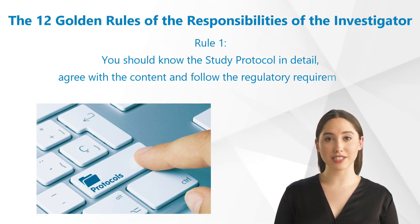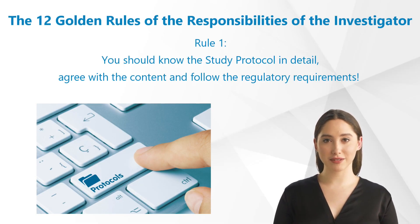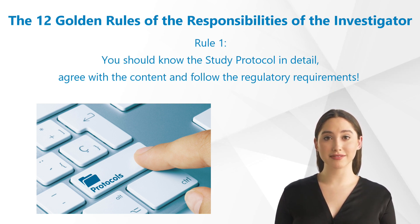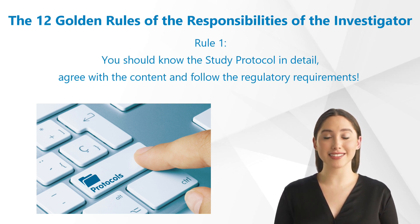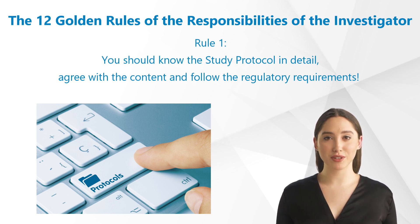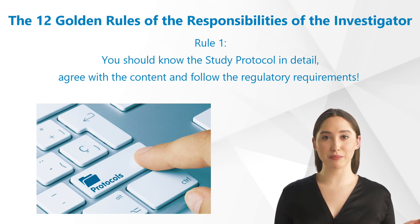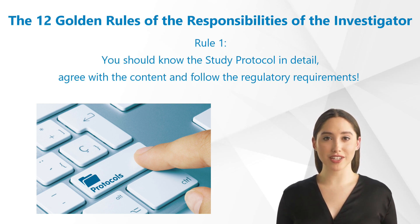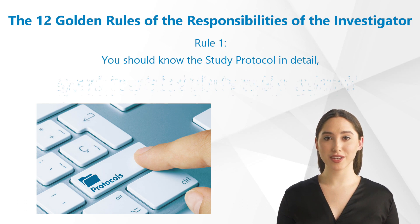Rule 1: You should know the study protocol in detail, agree with the content, and follow the regulatory requirements. After having read the protocol, agreed with the content, and signed the protocol signature page, the investigator must strictly follow the requirements of the protocol. Any violation of the protocol must be documented as a protocol deviation by the monitoring personnel of the sponsor. Protocol deviations occur frequently in clinical practice.